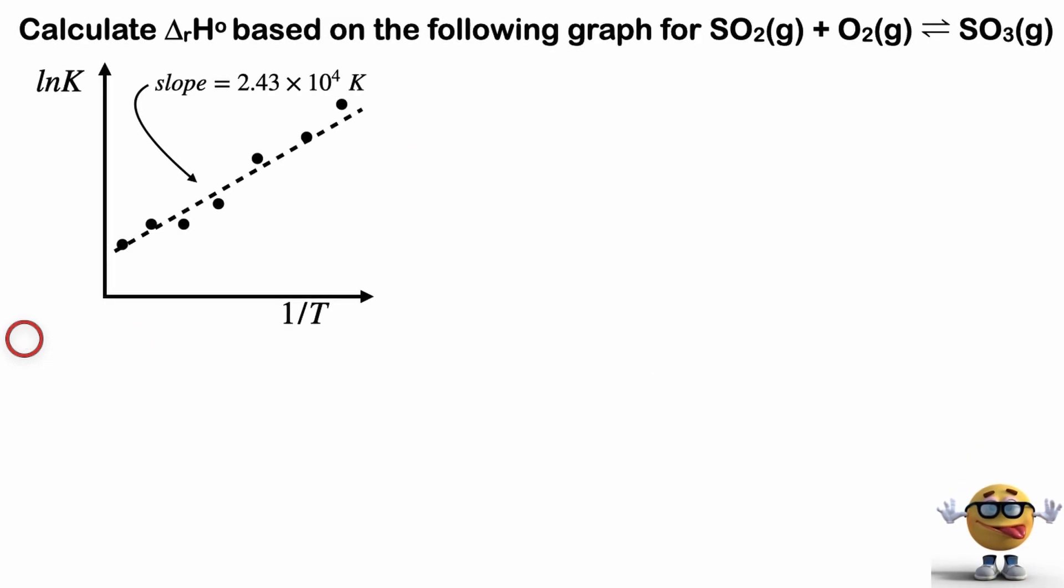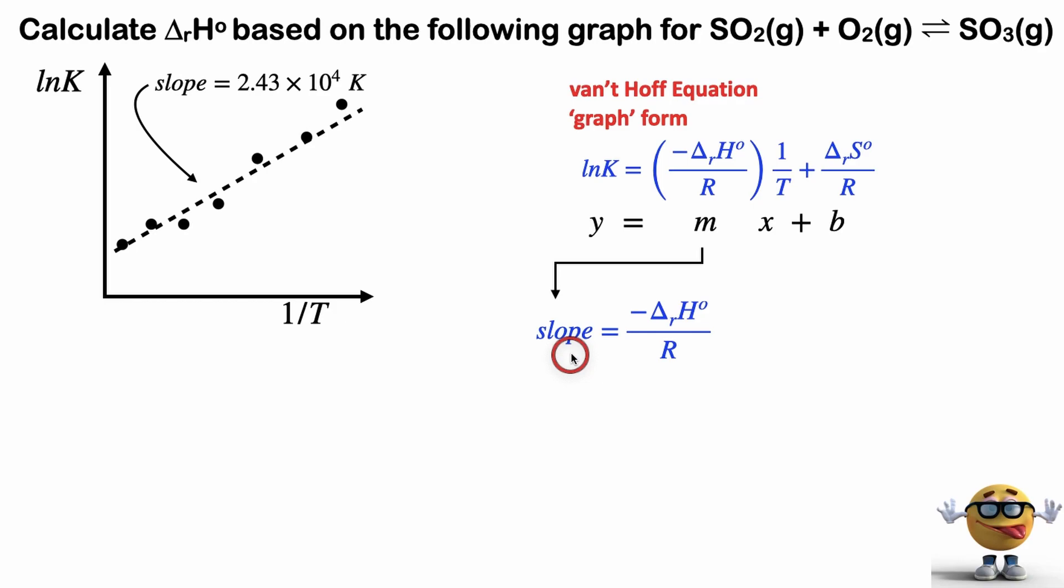Okay, now one of the most popular exam problems is to interpret a graph. And this is an example right here. Calculate the change in standard enthalpy of the reaction based on the following graph for this chemical reaction right here. And we're given what the slope is equal to. So to determine the change in standard enthalpy of the reaction, we're going to look at the van't Hoff equation and we're going to look at the graph form. Remember that form that I derived just earlier? Well, this is it right here. And if you compare this form to a straight line, y equals mx plus b, we'll see that m is the slope. So the slope is this part right here, which is negative the change in enthalpy over the gas constant R. And that equals the slope, which is what's given to us here.